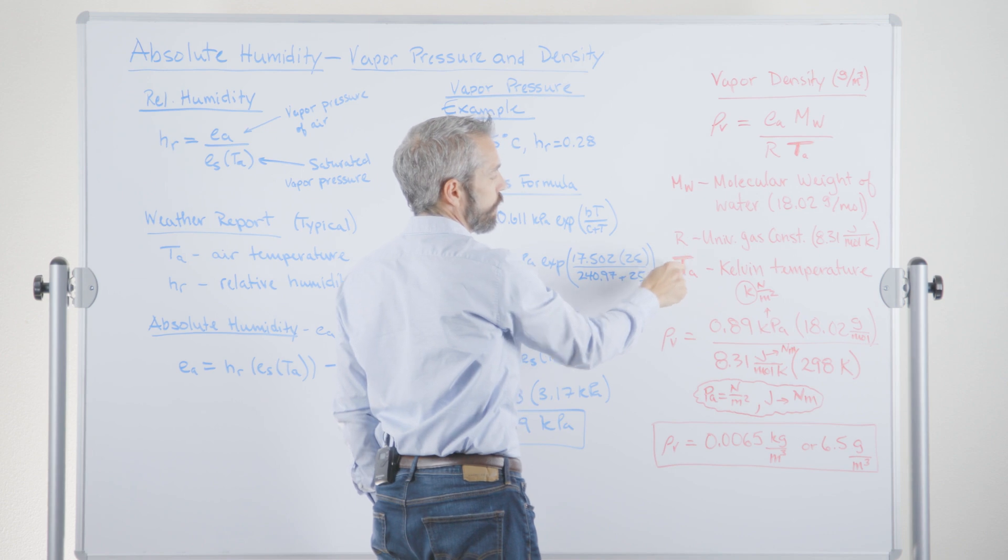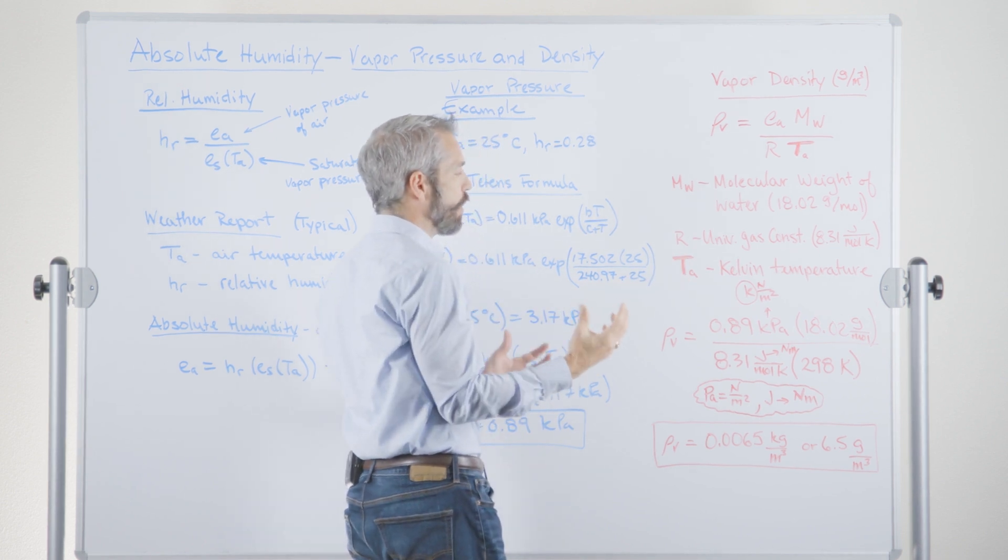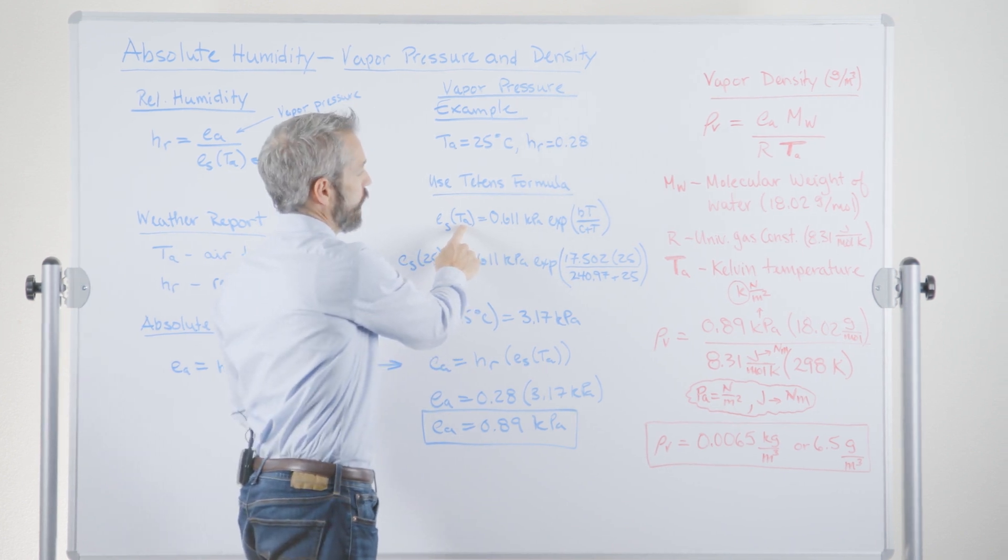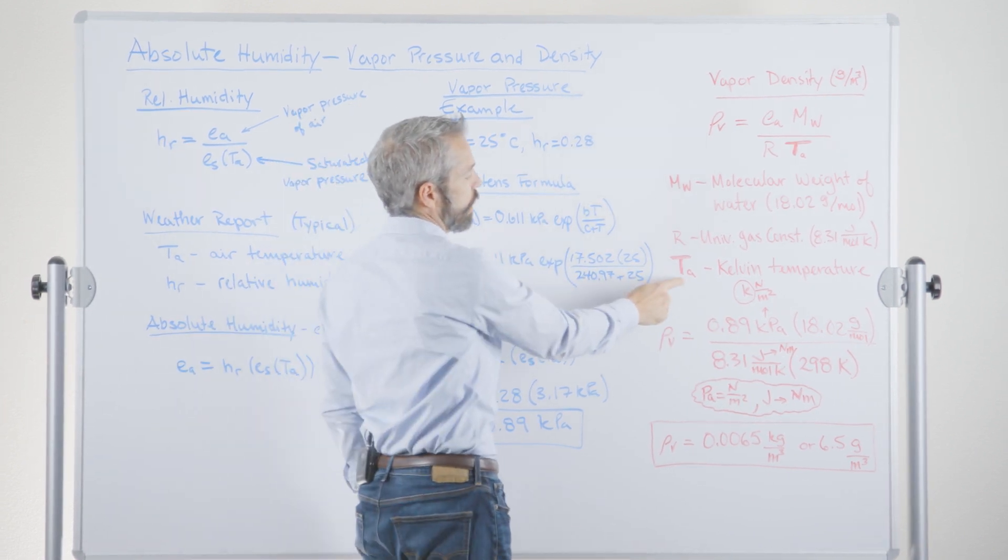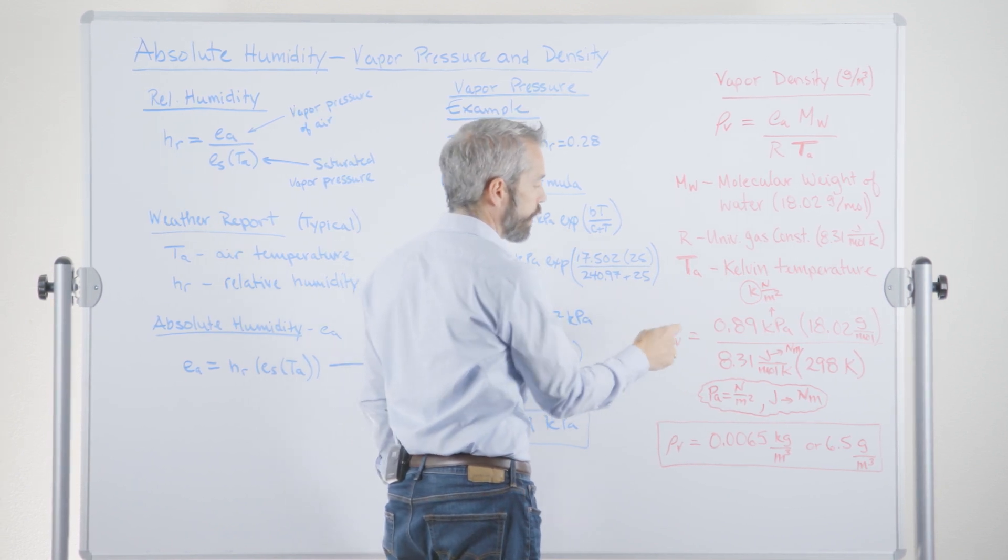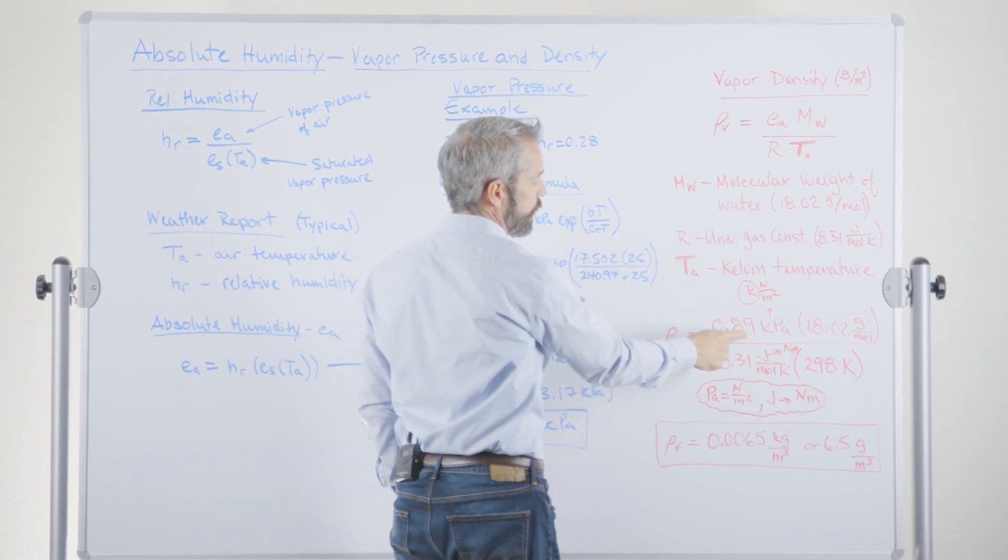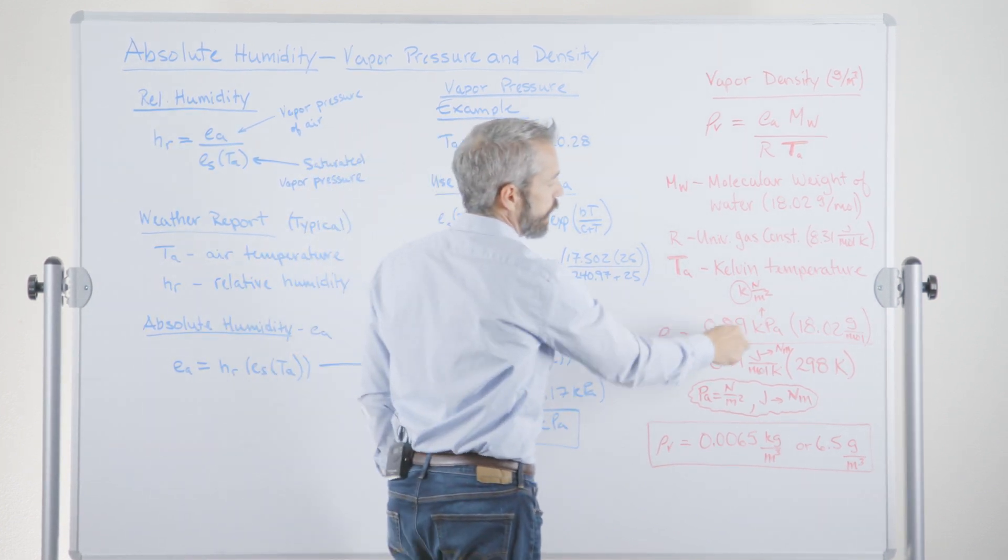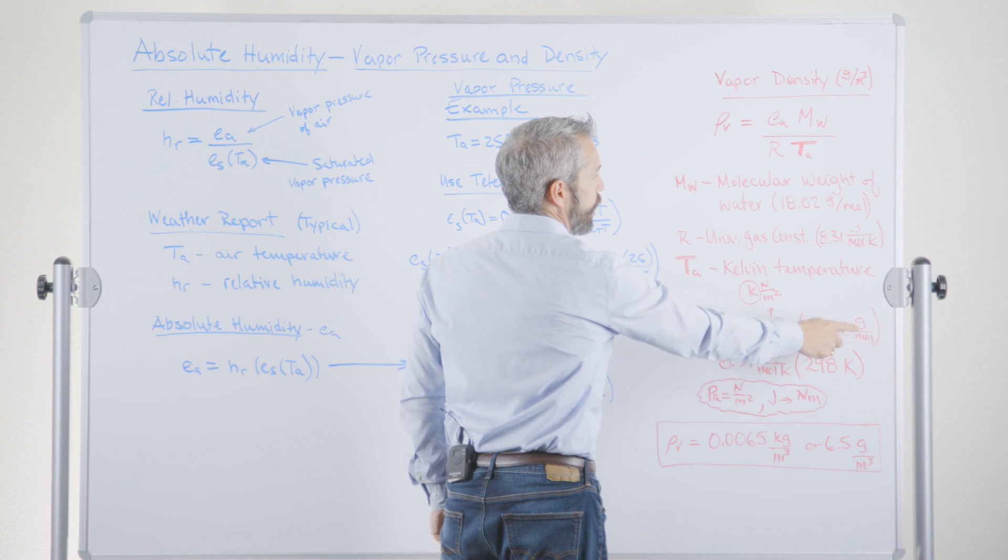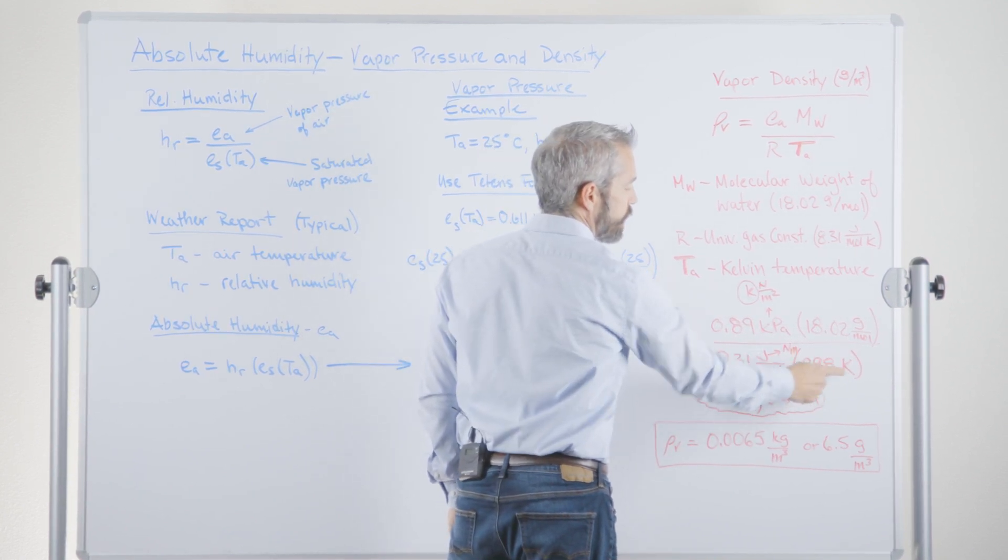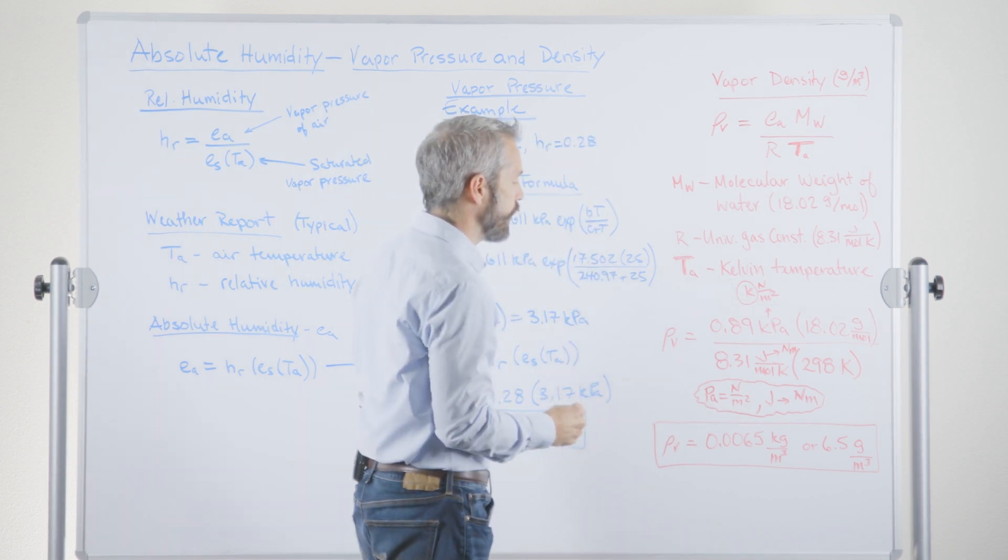And here's the Kelvin temperature of the air. I've scribbled this in a little bit. That's how I note the difference between something like this, which would be air temperature in Celsius and this air temperature in Kelvin. So, let's go ahead and plug all these into our equation. So there's our vapor pressure just out right here. We're just dragging that over here, put it in there. There's our molecular weight of water. There's our universal gas constant. And here is the Kelvin temperature of the air.